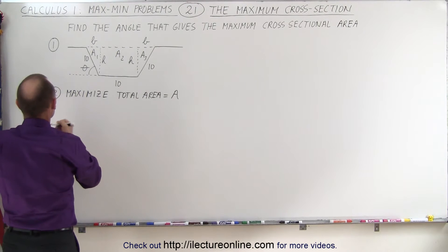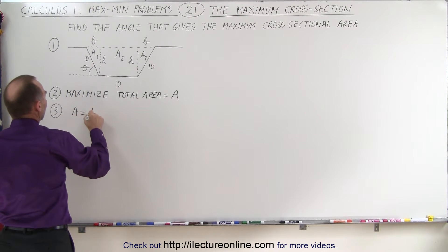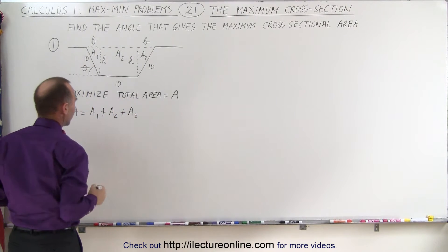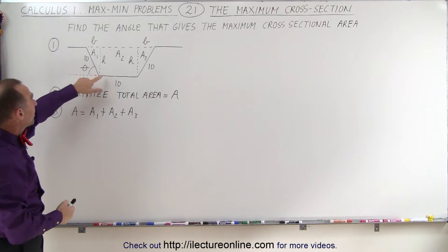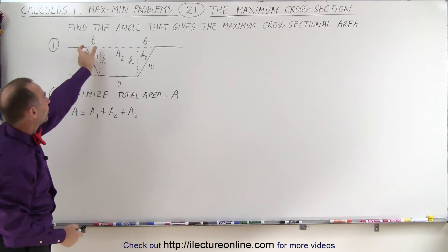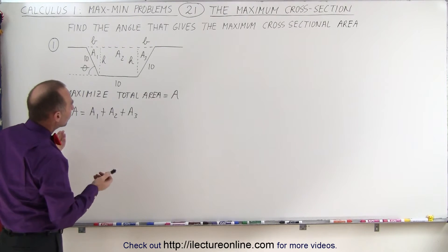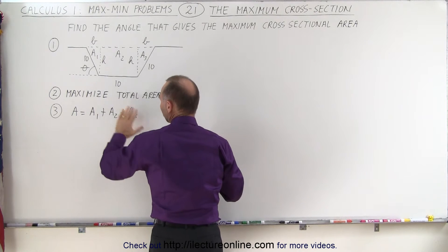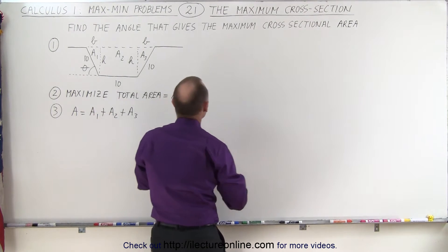The total area equation is simply A1 plus A2 plus A3. We'll need to express those in terms of the dimensions we have: H for the height and B for the horizontal distance on each side. We need some sort of constraint in order to find appropriate values for A1, A2, and A3.